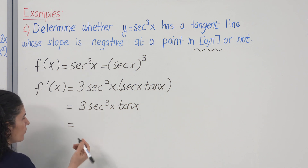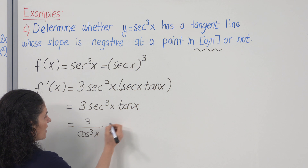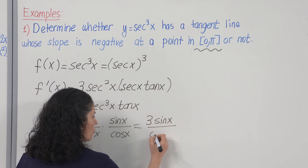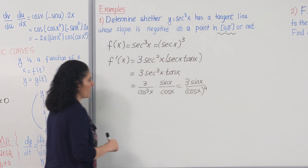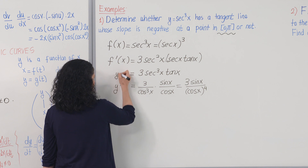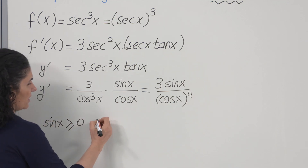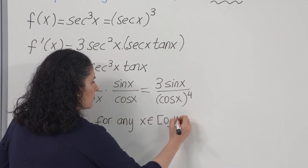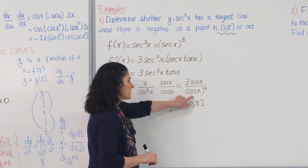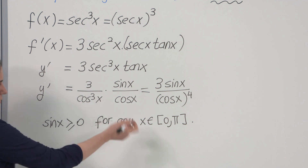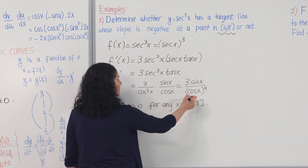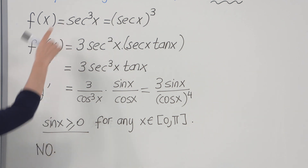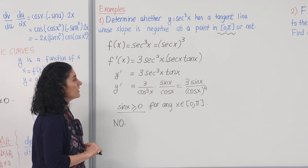Writing sec in terms of cosine: 3 over cos³(x), times sin(x) over cos(x), giving 3 sin(x) over cos⁴(x). In the given interval, sine x is always non-negative, and cosine to the fourth power is always positive, so the derivative cannot be negative. The function does not have a tangent line with negative slope in the given interval.